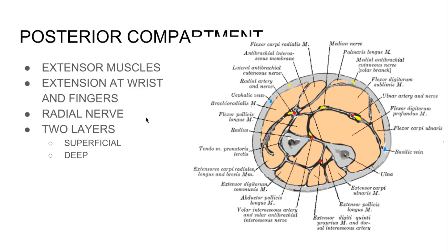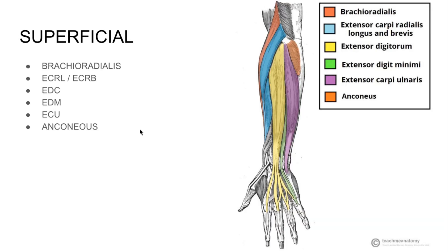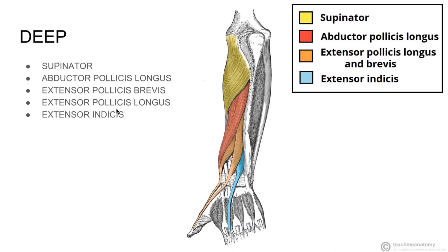In the posterior compartment — the back of your arm — these are your extensor muscles, so they perform extension at the wrist and fingers. Back of the arm means posterior cord, which turns into the radial nerve. In the superficial layer we have brachioradialis, extensor carpi radialis longus and brevis, extensor digitorum communis, extensor digiti minimi, extensor carpi ulnaris, and the anconeus muscle. These are all innervated by the radial nerve. Then we have the deep muscles: supinator, abductor pollicis longus, extensor pollicis brevis, extensor pollicis longus, and extensor indicis. Again, it's all named for what it does and where it goes.